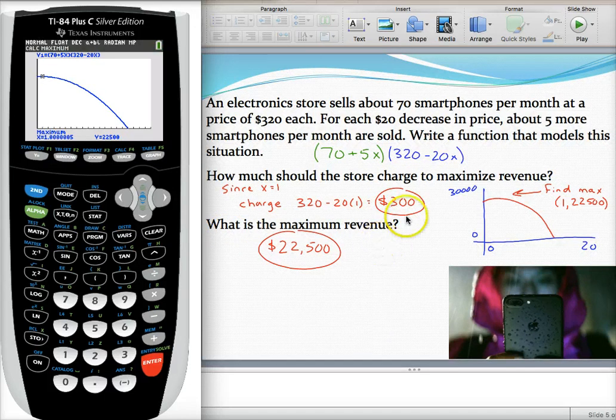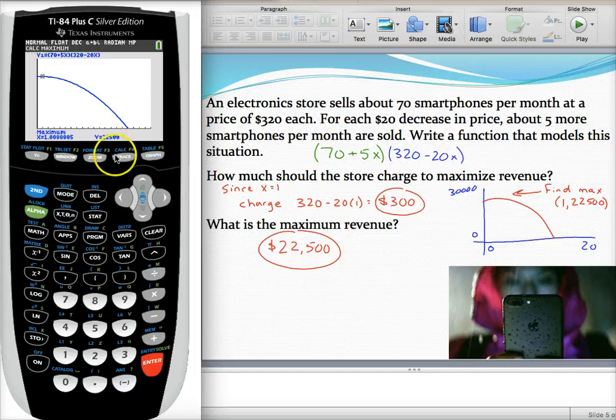And then the second question was, what is your max revenue? Well, that's the output. That's the Y value. So that's just the number as is right here from the calculator. So my maximum revenue is $22,500.